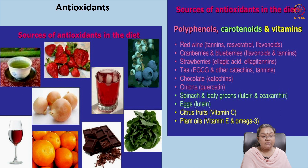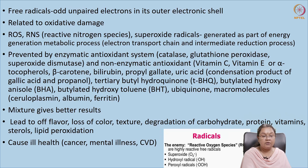Another important group is antioxidants. Along with antioxidants we have carotenoids, vitamins, and polyphenols. You can get them from natural sources like red wine, tea, onions, spinach, eggs, and plant oils — these are all rich natural sources of antioxidants.